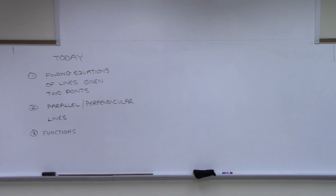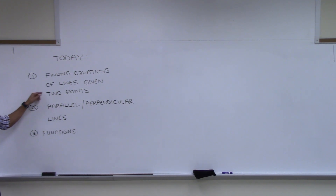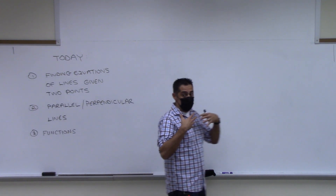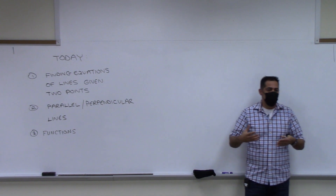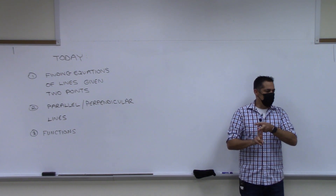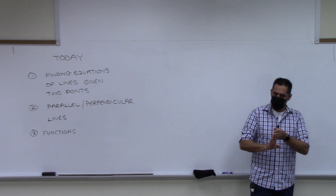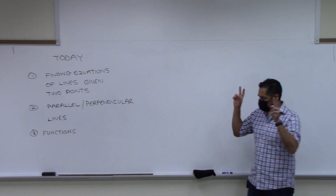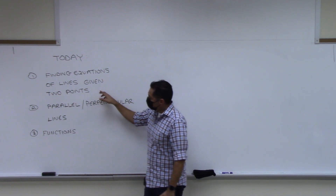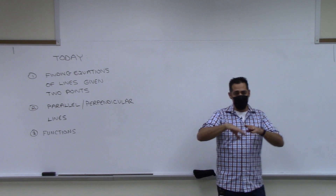Today we are going to be finding equations of lines if we're given two points. What we've done in this class so far is I've given you the equation of lines and asked you to graph them. We had two methods: the intercept method and the slope-intercept method. Now I'm going to shift it — I'll give you two points on a line and ask you to come up with the equation.